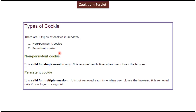There are two types of cookies in servlets. The first is a non-persistent cookie — it is valid for a single session only, meaning when you close the browser, that particular cookie will be removed from the client machine. The second is a persistent cookie — it is valid for multiple sessions, meaning when you close the browser, the cookie will not be removed. The cookie is only removed when you log out or sign out. This is called a persistent cookie.